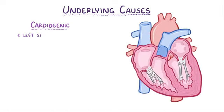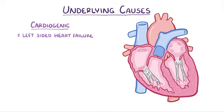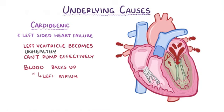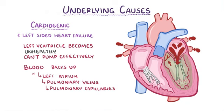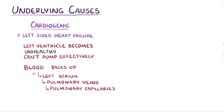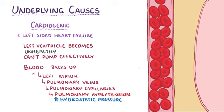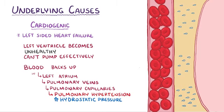The most common cardiogenic cause is left-sided heart failure. In left-sided heart failure, the left ventricle becomes unhealthy and can't pump effectively, which means that blood starts to back up into the left atrium and then the pulmonary veins and pulmonary capillaries. The extra blood in the pulmonary capillaries causes pulmonary hypertension, which is an increase in the hydrostatic pressure of the pulmonary blood vessels, and this pushes more fluid into the interstitial space of the lungs, which leads to pulmonary edema.